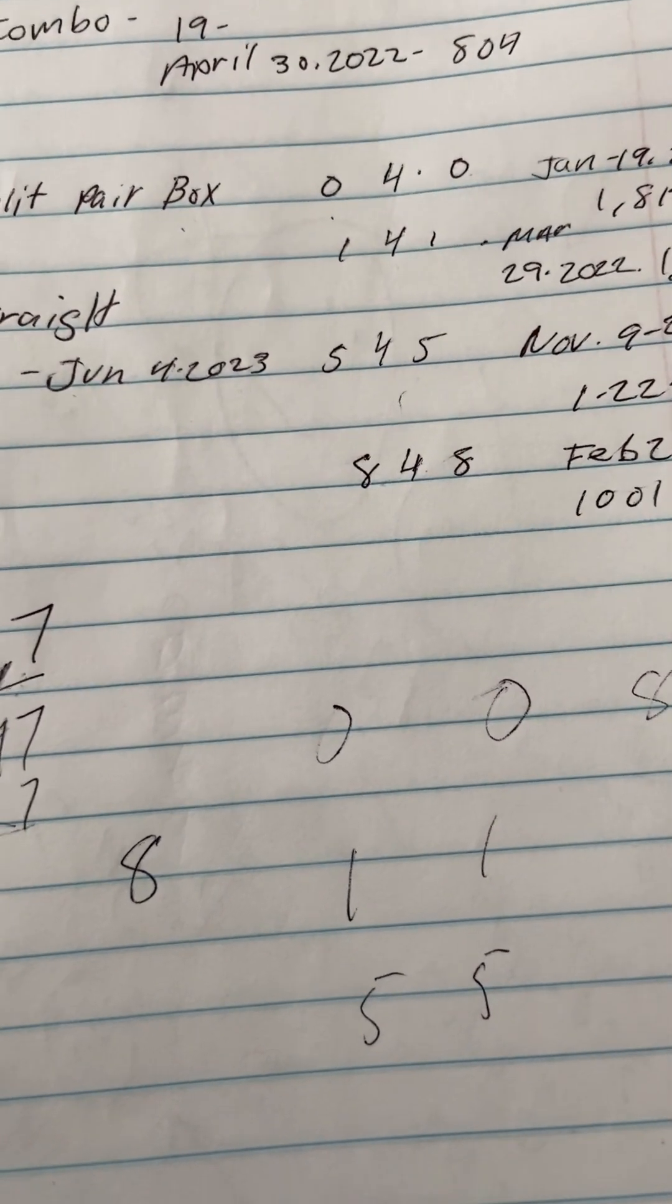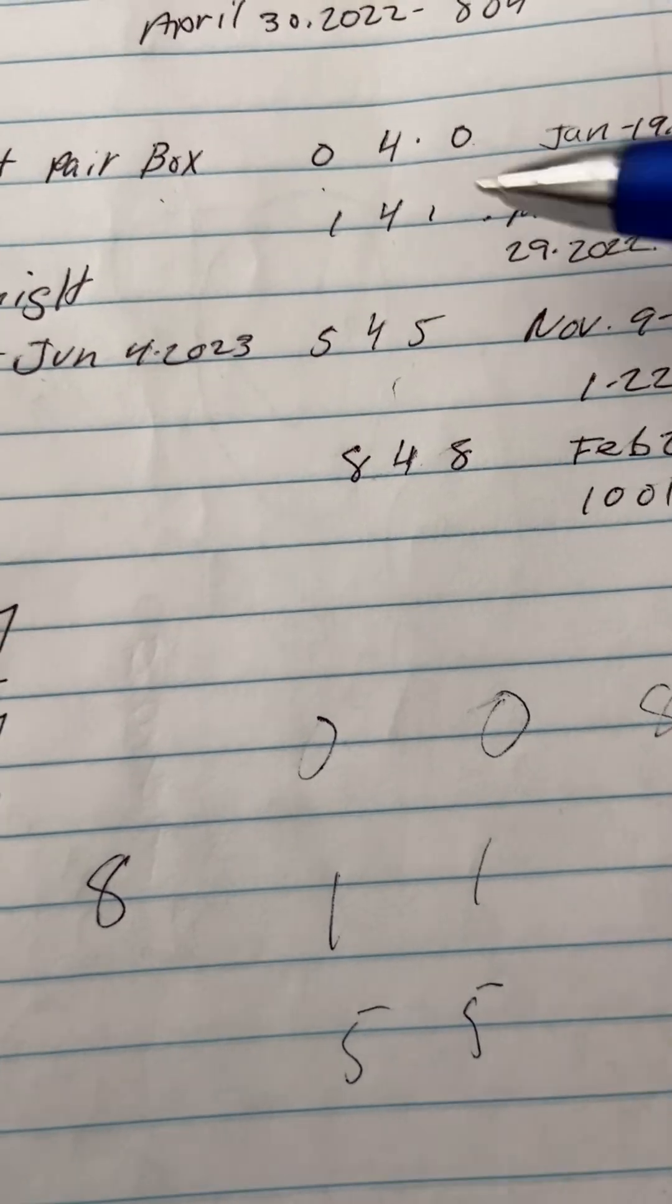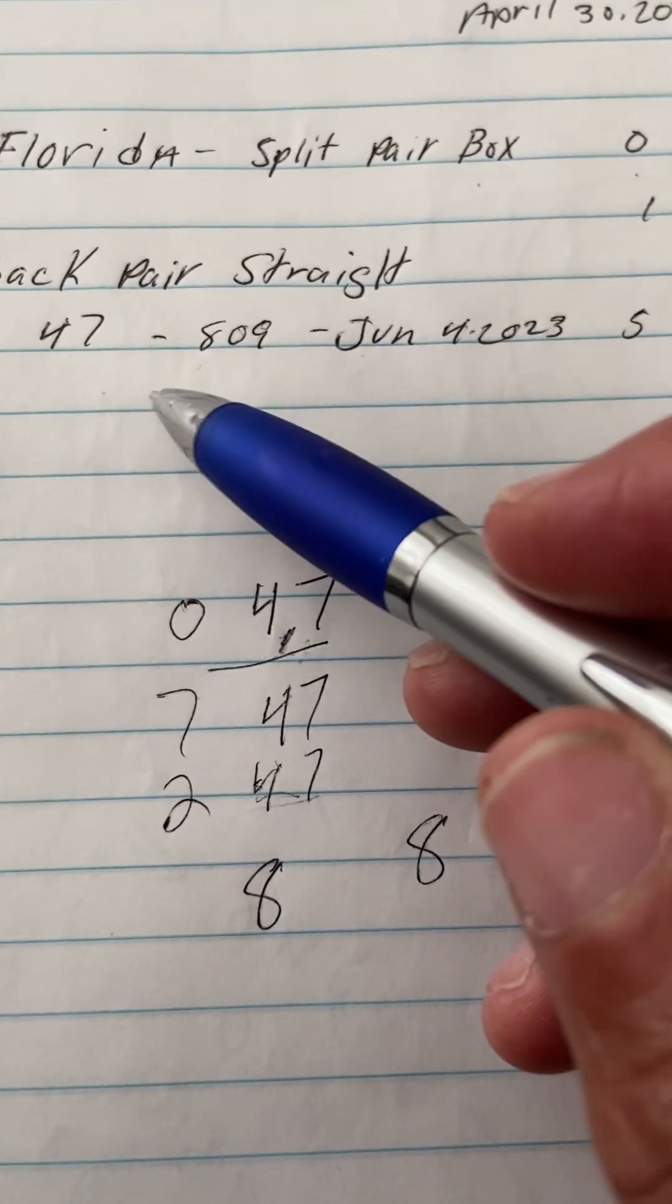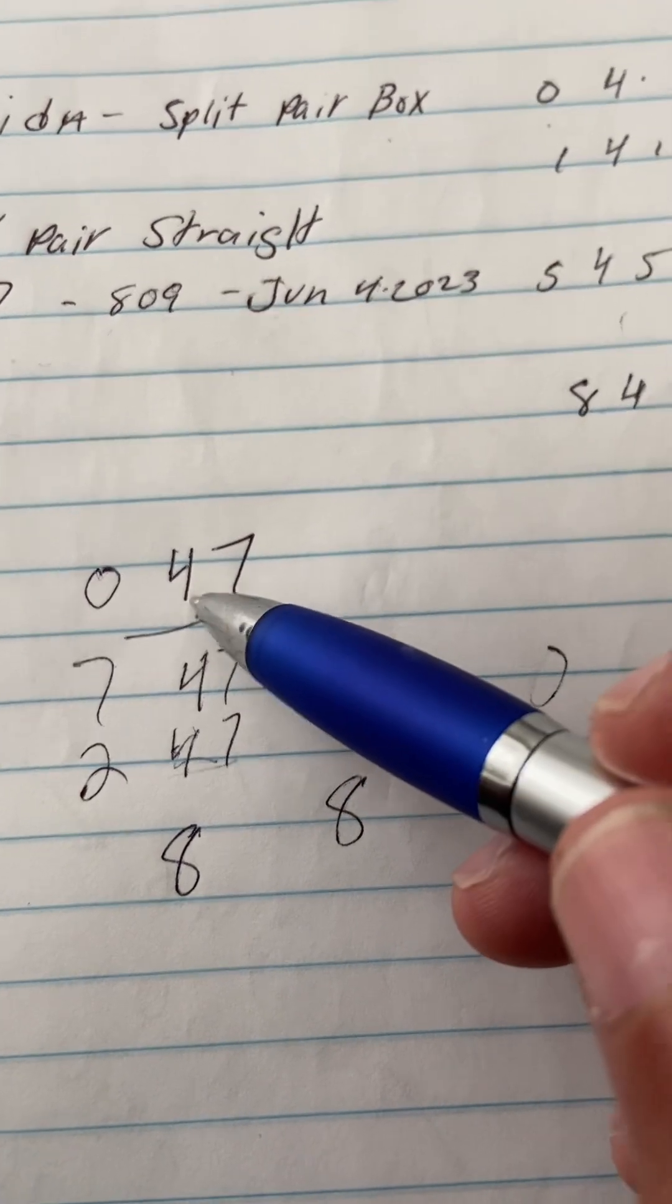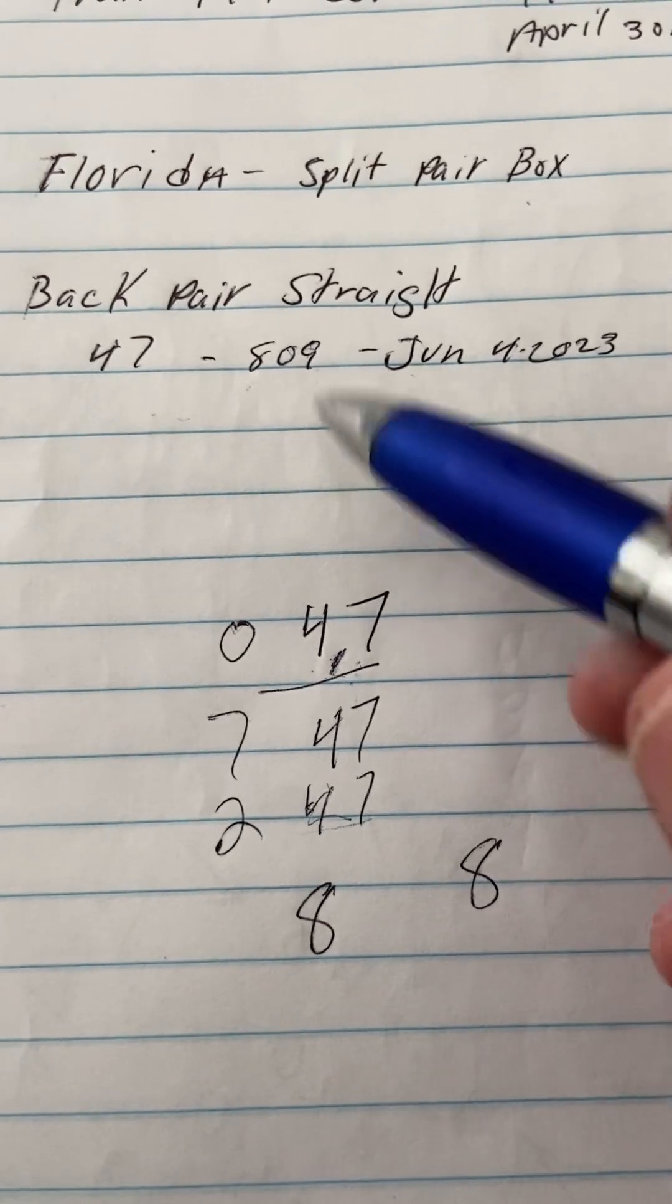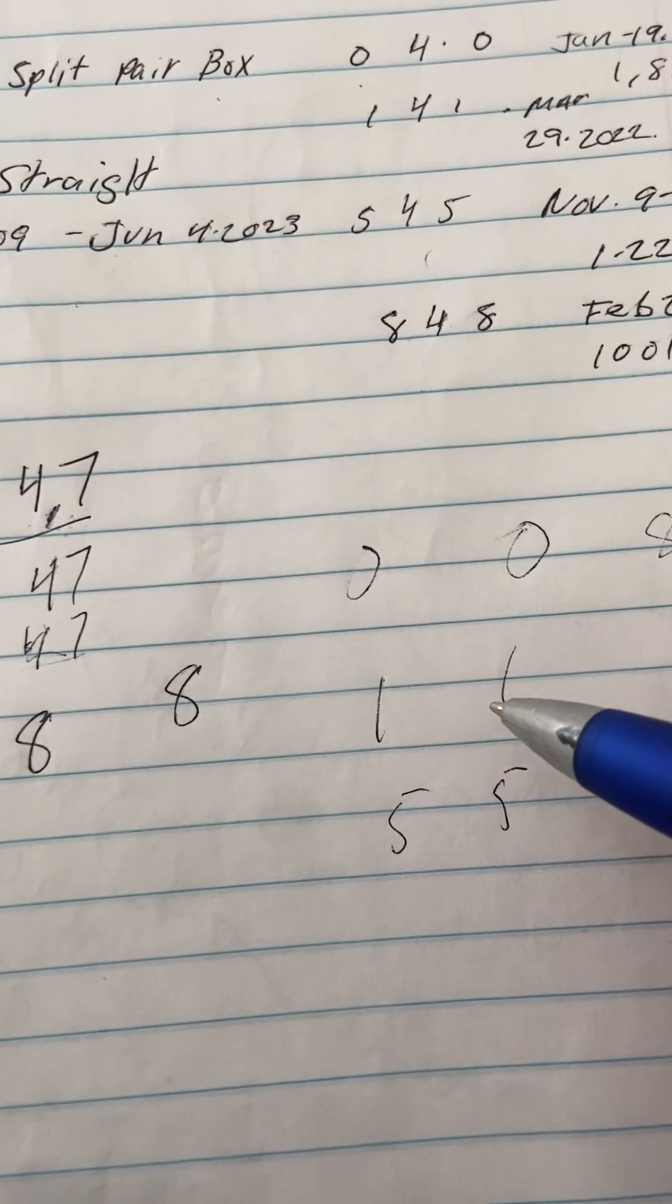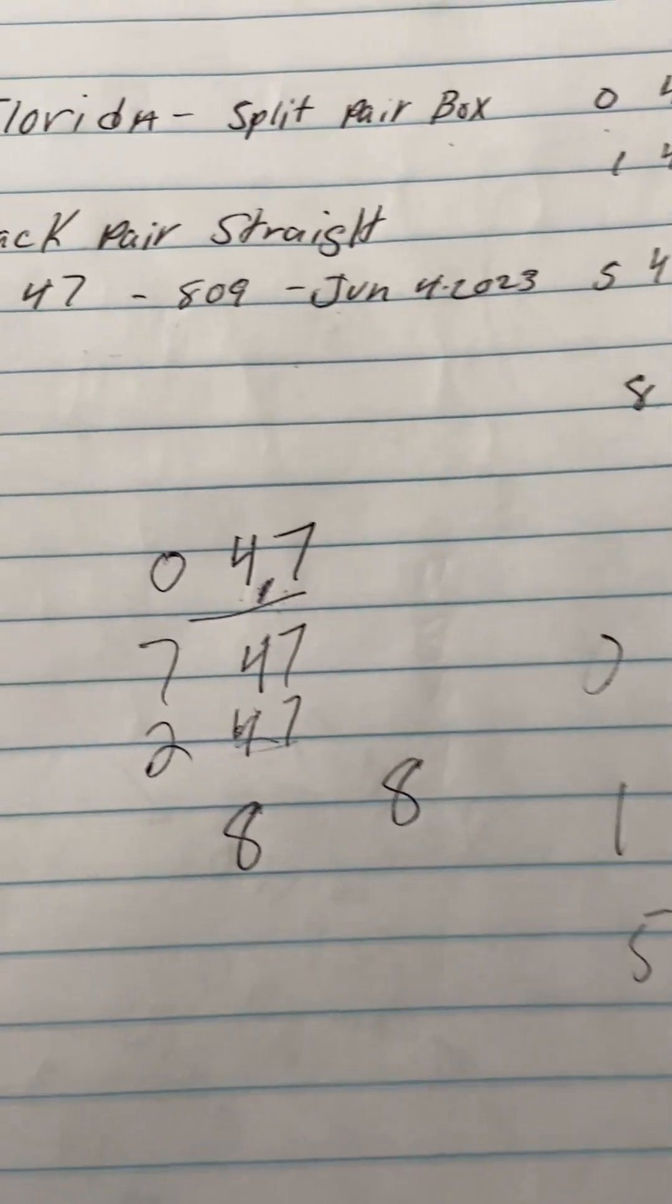Like I say guys, it's just easy math and knowing where to place your numbers at. Again, your split pairs are overdue. I used your 47 because it's 809 draws out. So 4 is the first number that starts with your back straight pair, so you can go ahead and just slide your 4s right in the middle of all of these numbers.